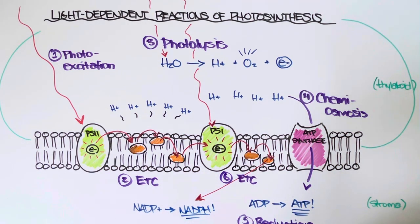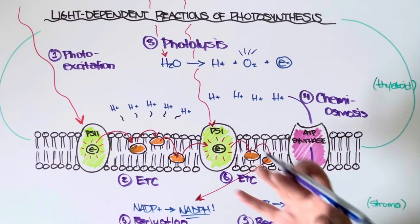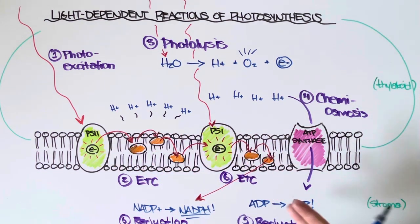So this is our final step, and it is again called reduction. So we have two electron transport chains, we have two rounds of reduction, both of which produce very different products.